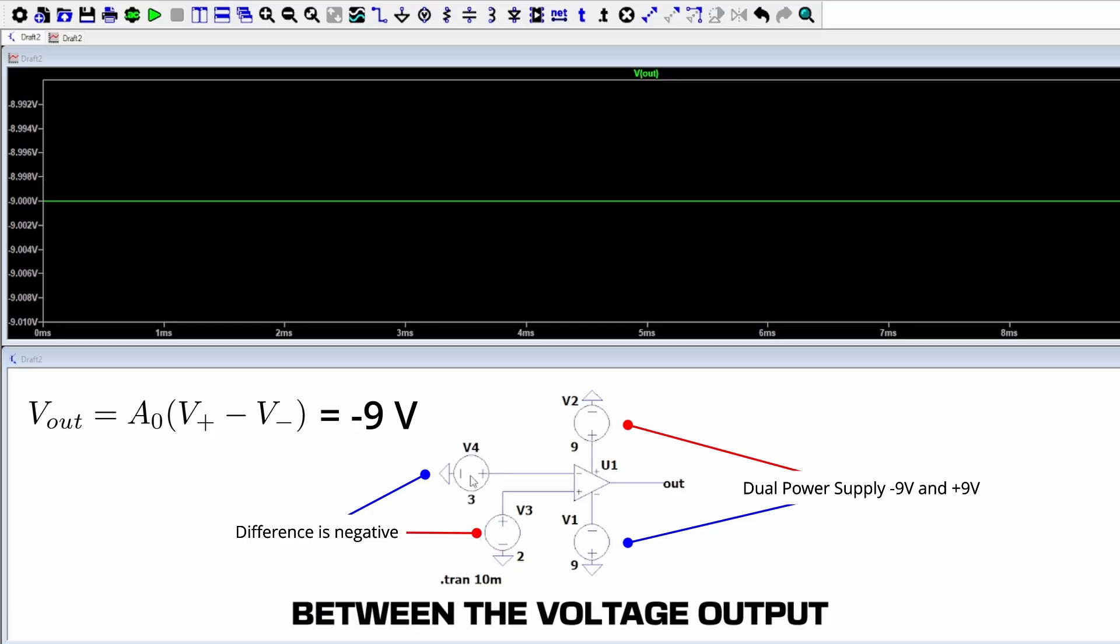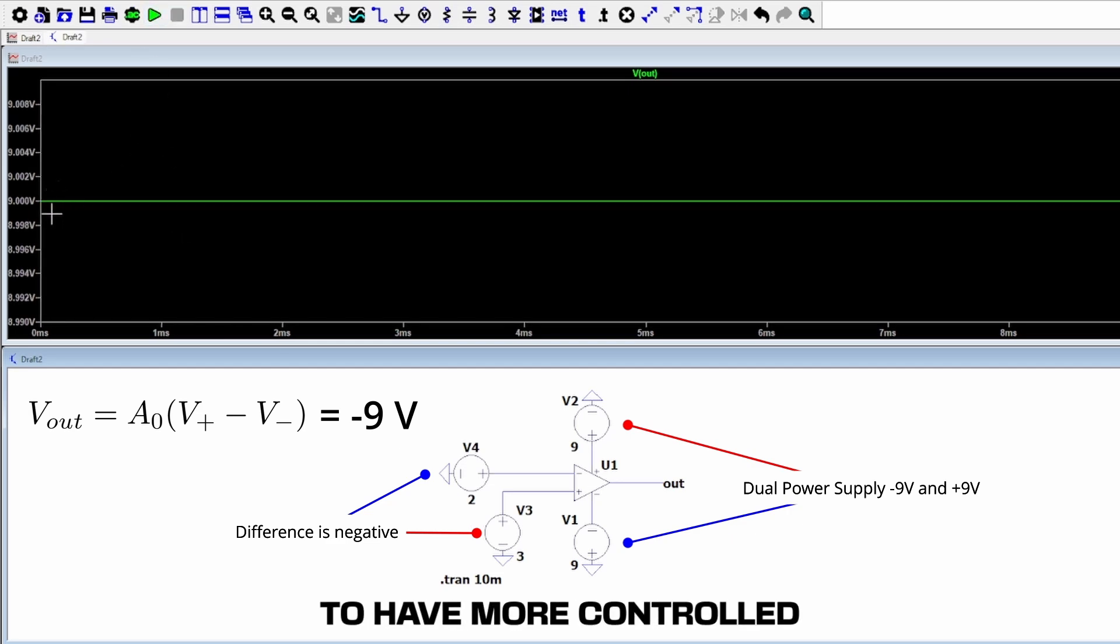Gain is the ratio between the voltage output and the voltage input. This open-loop configuration is a great comparator, however if we want to have more controlled amplification, or gain, that doesn't hit a rail each time, we need to add more components. This generally involves some sort of feedback loop.